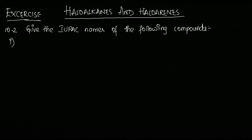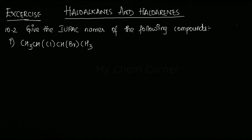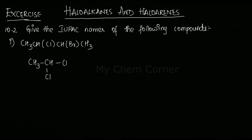The first compound is CH₃CH(Cl)CH(Br)CH₃. Let's open the structure: we have CH₃, then CH with Cl in brackets as a branch, then CH with Br in brackets as another branch, and then CH₃. This question is based on having two halogen atoms in the same compound.